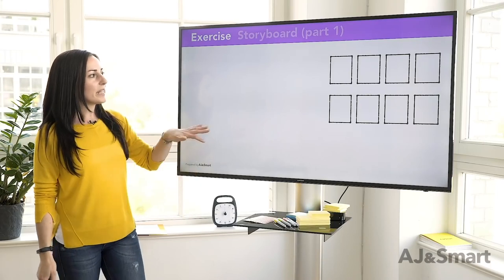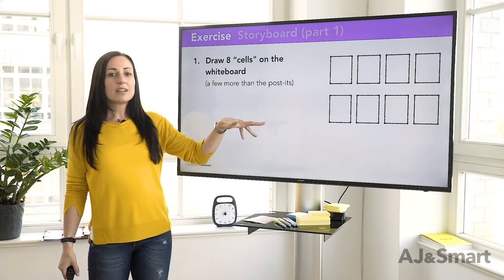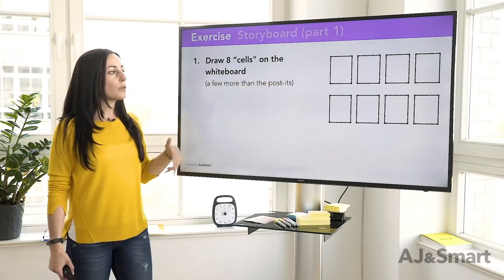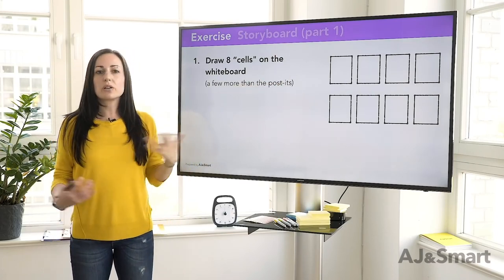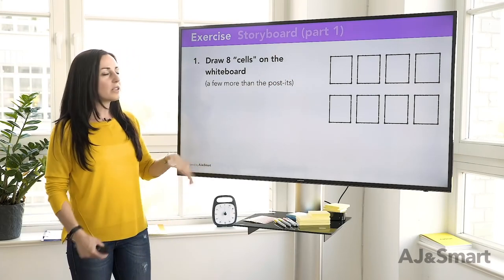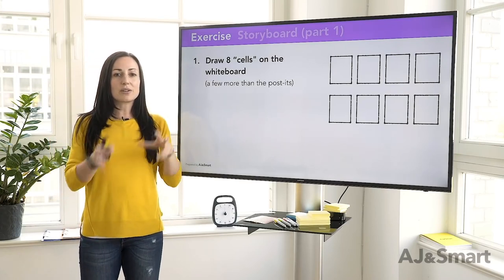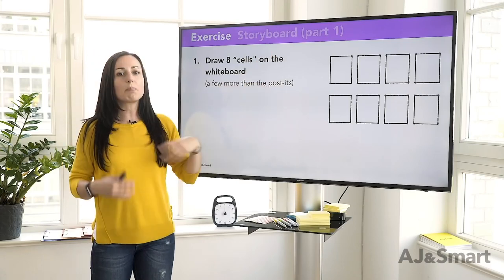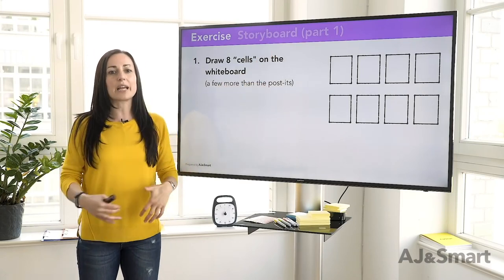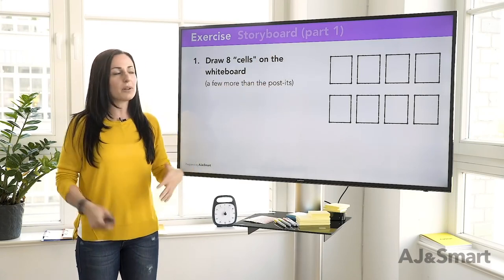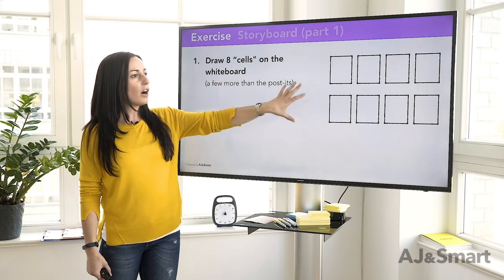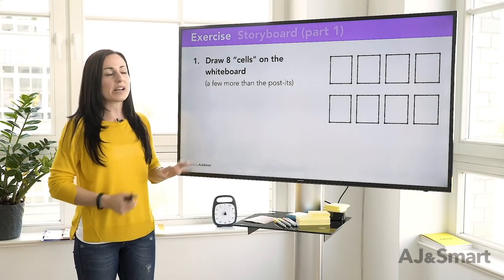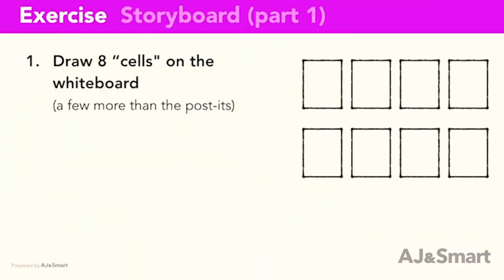Part one is drawing eight boxes or cells on the whiteboard — you can have a couple of extra ones if you want. We're going to try and translate those six post-it notes from the user test flow into what might happen on each screen or at each real step along the way. Often a step on a post-it note might translate into more than one screen, so we give ourselves a few extras.